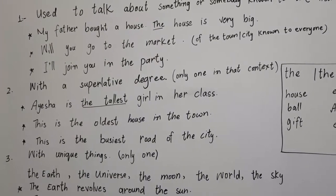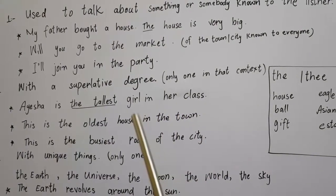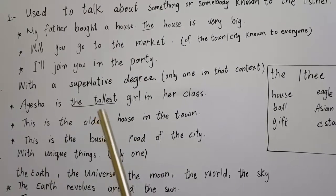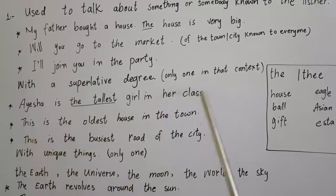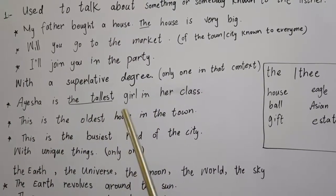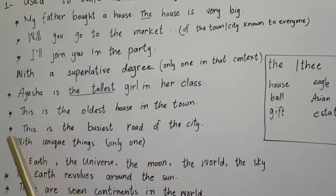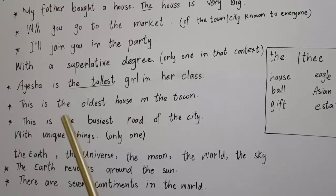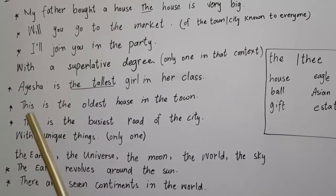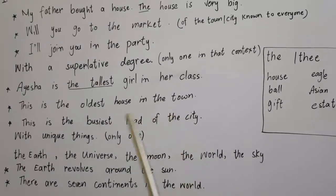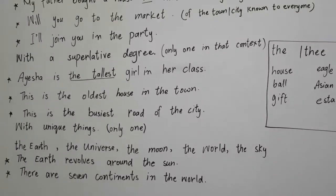Rule number 2: we use 'the' with the superlative degree — only one in context. For example: 'Ayesha is the tallest girl in her class.' The adjective is in the third degree, making her the only one in that context. 'This is the oldest house in the town' — only one such house in this town. 'This is the busiest road of the city.'